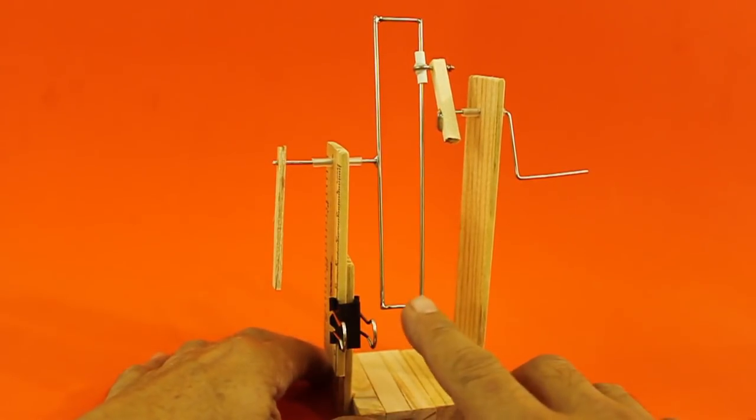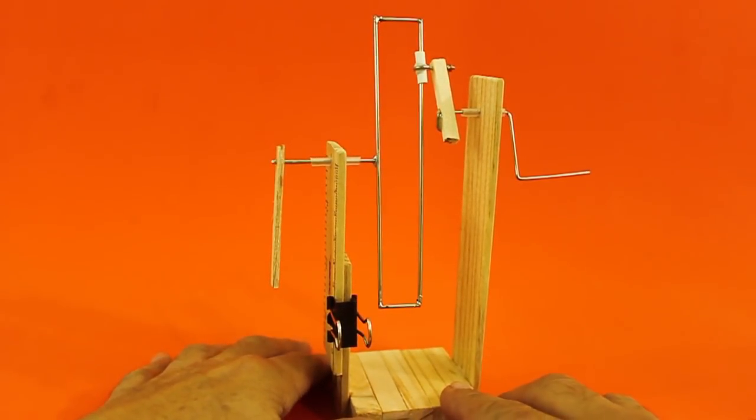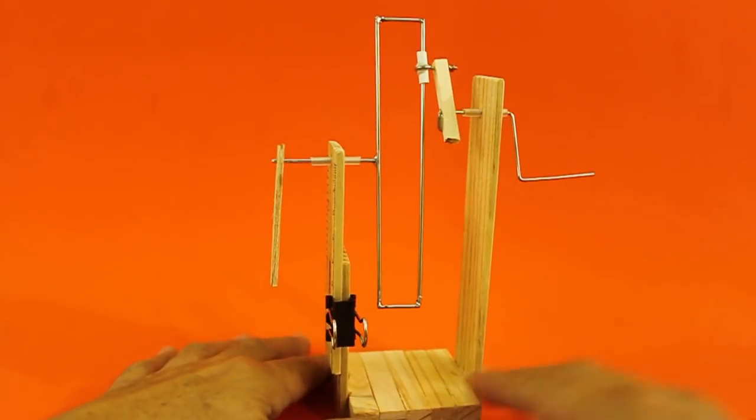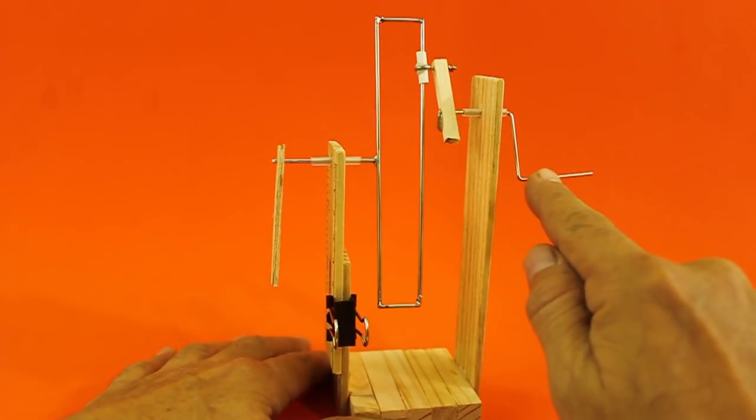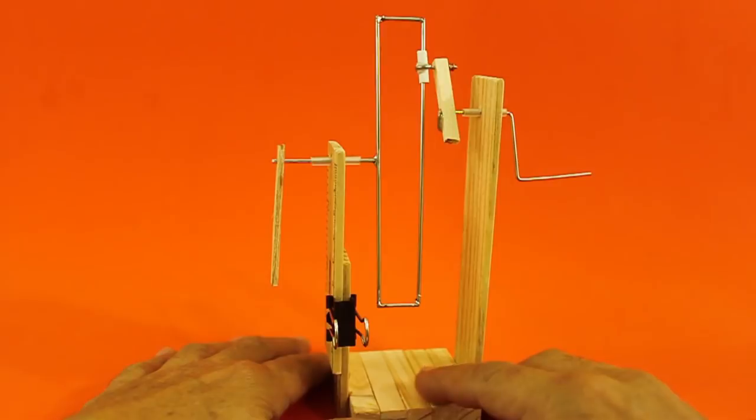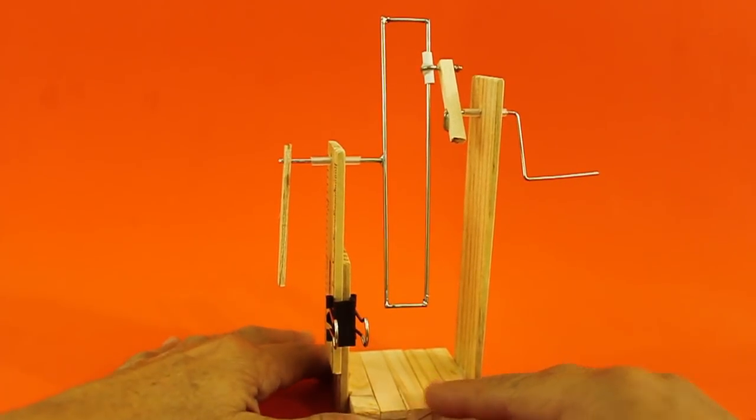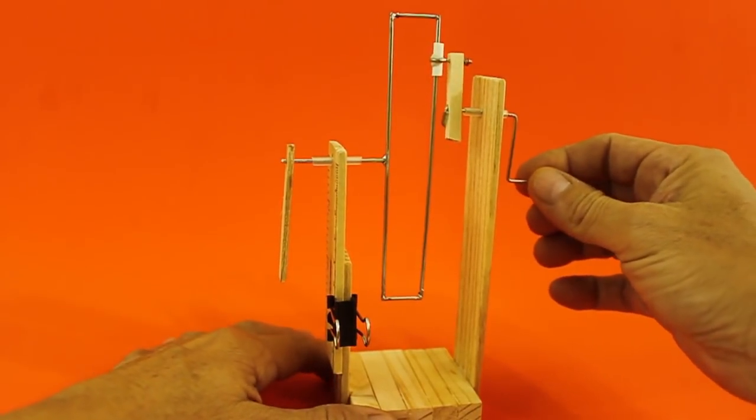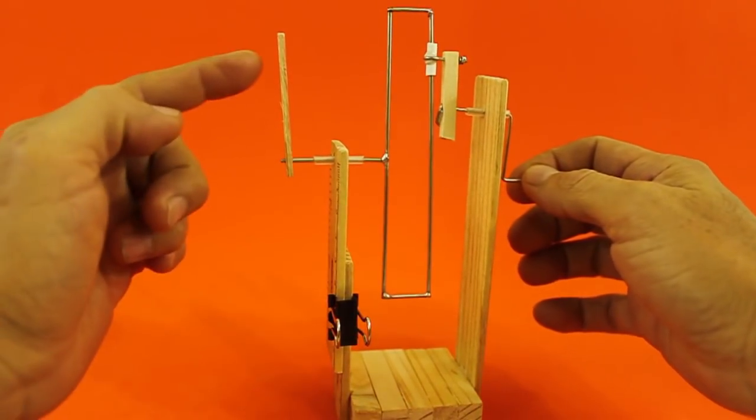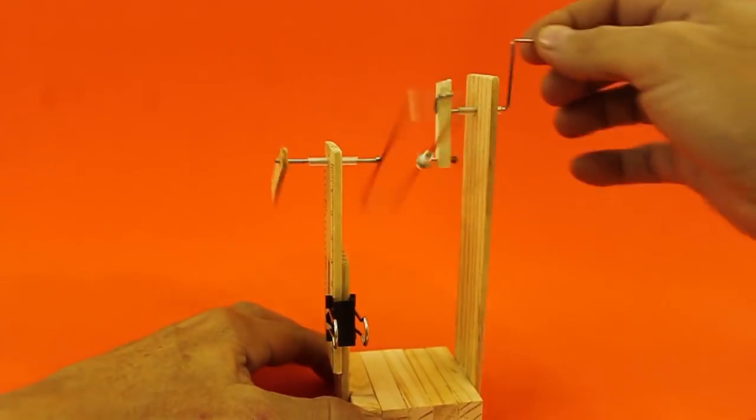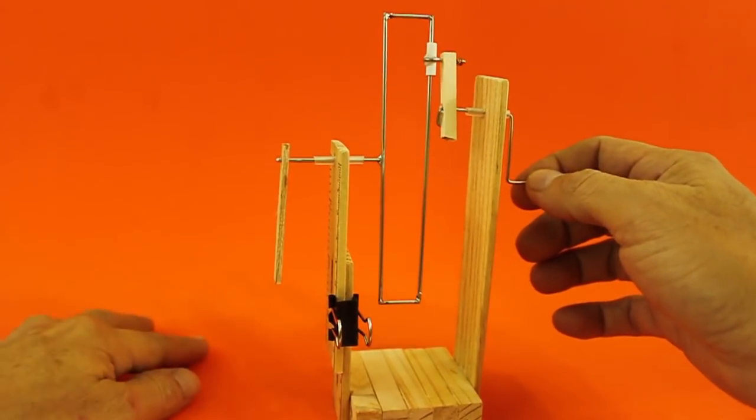The mechanism is a reduction two to one, that is for every two turns of the input axle the output axle only turns one. Let's see: one turn and half a turn here, two turns and a full turn.